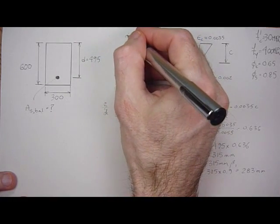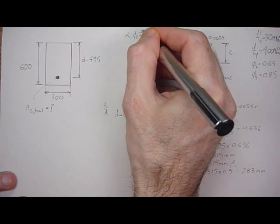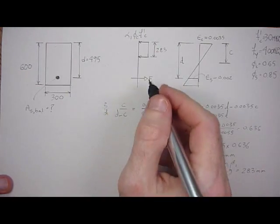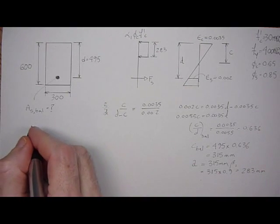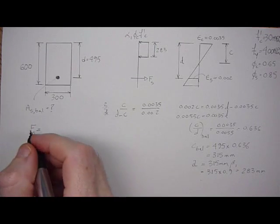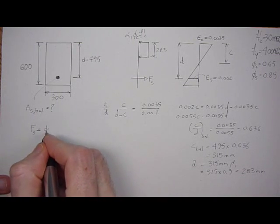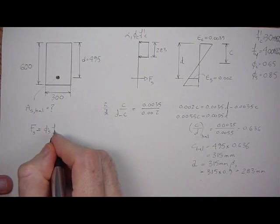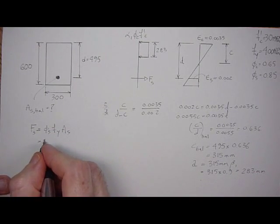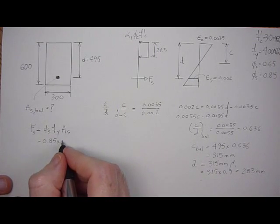We said that it was alpha 1, phi C, F prime C. So we can determine the force in the steel and force in the concrete again. The force in the steel is phi of the steel, area steel, F yield, area steel. And that's 0.85 times 400 MPa.